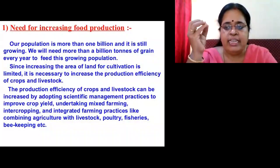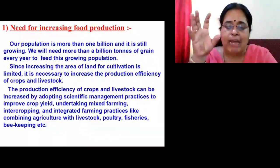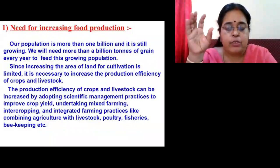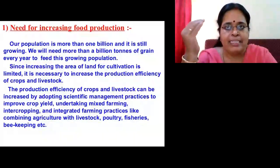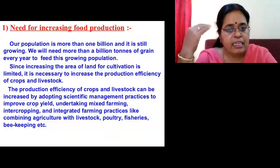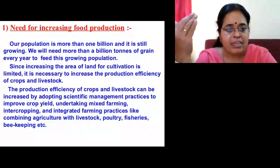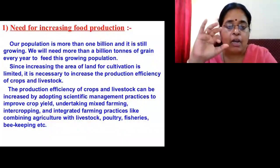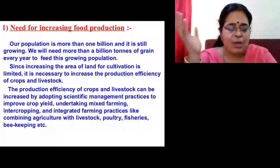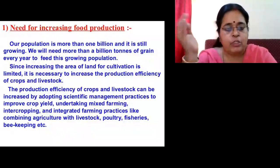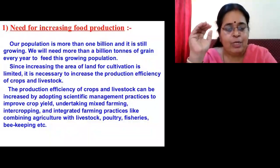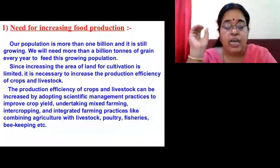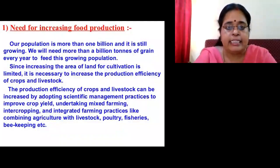Apart from agriculture, we can also take up animal husbandry, which involves farming practices like livestock keeping, poultry keeping, fisheries, and beekeeping. Every farmer in India will have some animals in his farm. When he maintains those farms in a proper scientific manner, his income is increased. So agriculture and animal husbandry are complementary occupations, one helping the other, and in this chapter we'll be studying both in detail.